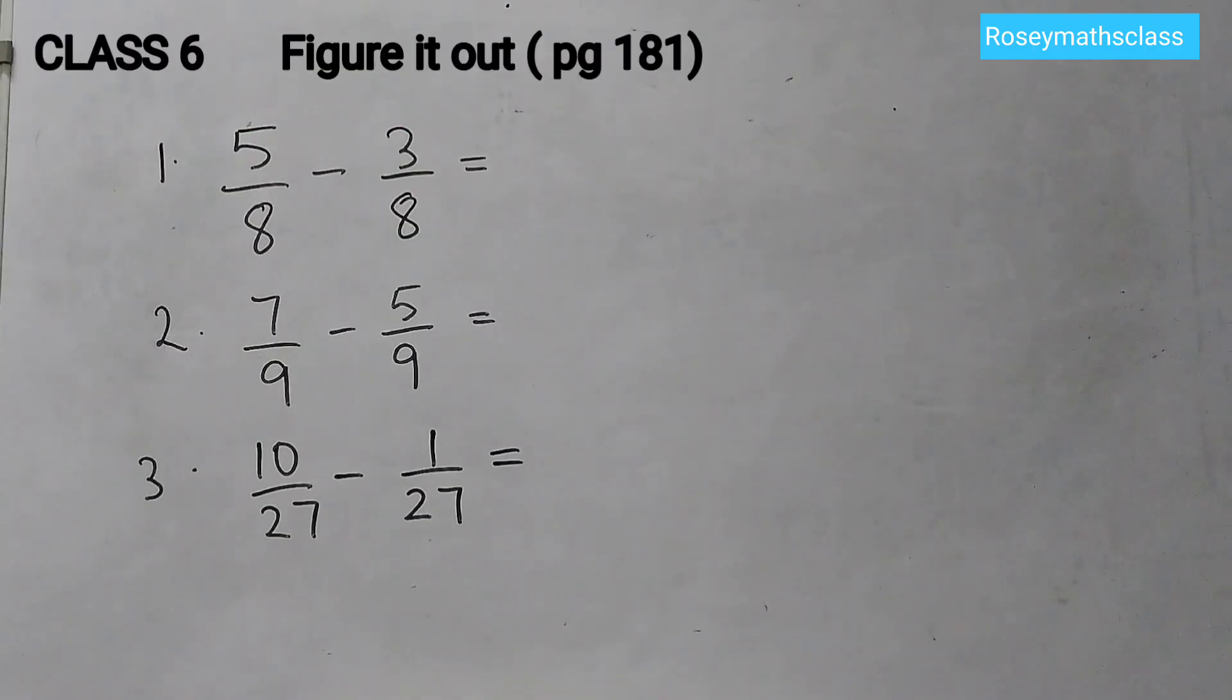Hello students, welcome back to Rosie Maths class. Here we are going to do these three problems. These are given on page number 181, figure it out. So we need to do the subtraction and this is very easy because the denominators are the same: 8, 8, 9, 9, 27, 27.